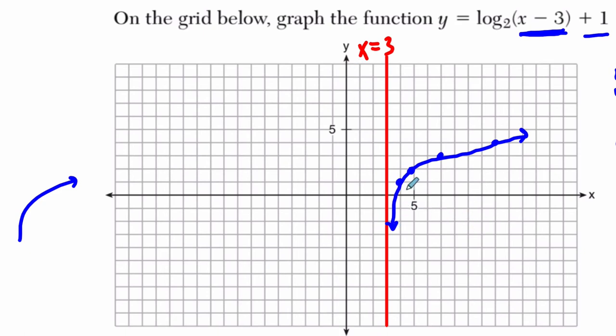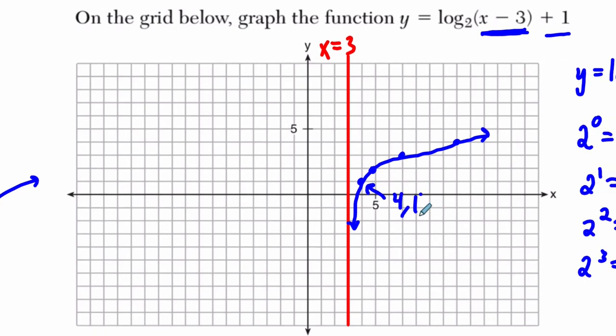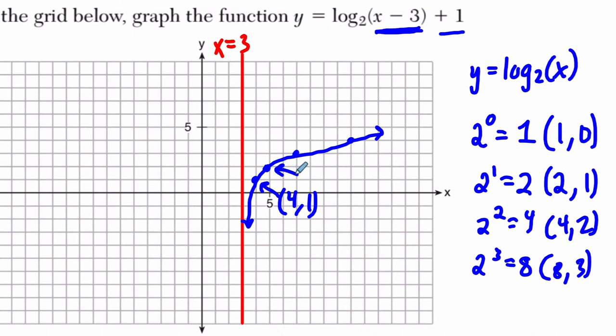So again, each of these points, right, I'm thinking of my parent function here, (1, 0). Just to recap, that moved 3 over to the right, so moved to 4, and then up 1 to (4, 1). This moved to (5, 2). And (5, 2) is 3 to the right from 2, and up 1 from this point here, and so on and so forth.